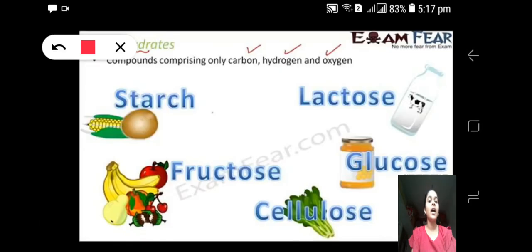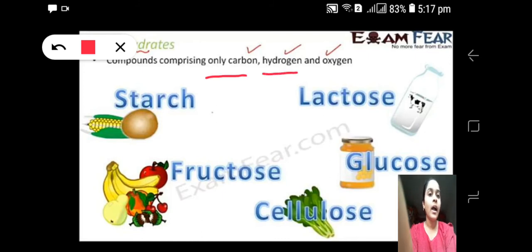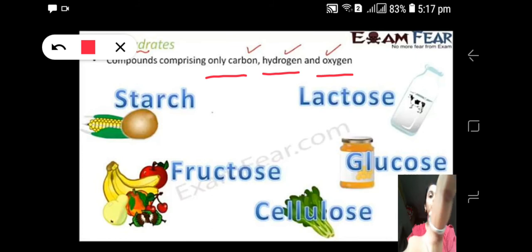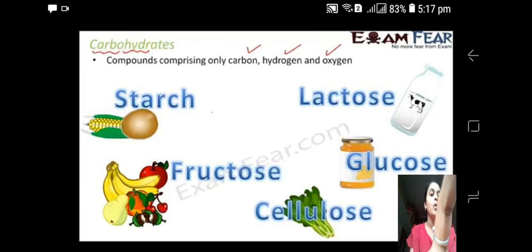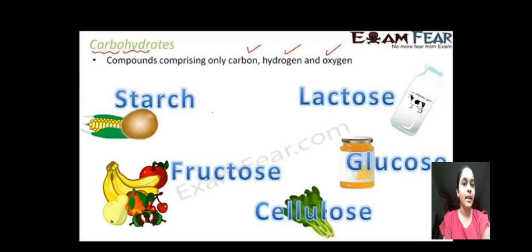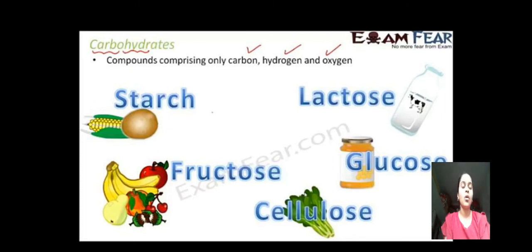One more important thing: carbohydrates are chemically formed by carbon, hydrogen, and oxygen. These three chemical components form carbohydrates, which is why we name it 'carbohydrate' — from carbon, hydrogen, and oxygen. That is all about simple carbohydrates.